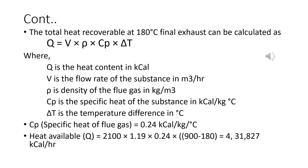Cp is the specific heat of the substance, also a constant value of 0.24. Delta T is the temperature difference — it is already mentioned that the exhaust is at 900 degrees Celsius, so delta T will be 900 minus 180 degrees. V has been given as 2100 cubic meters per hour.